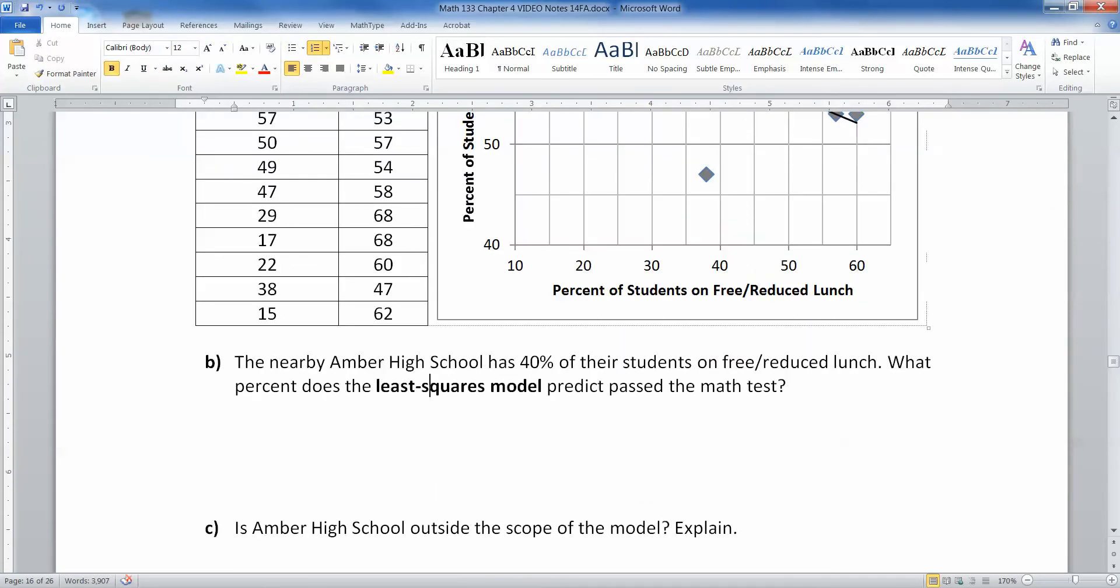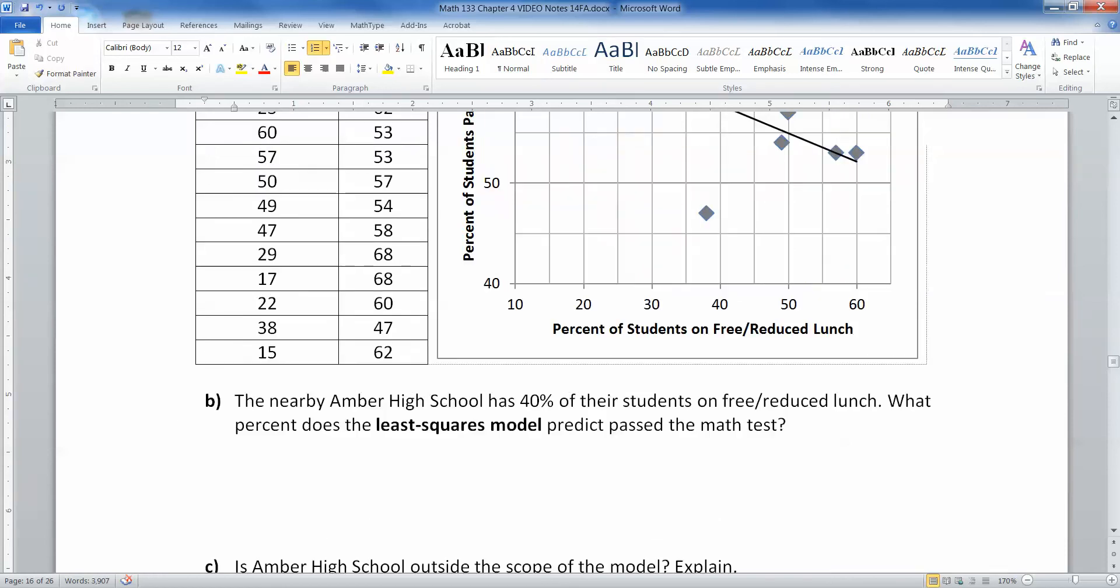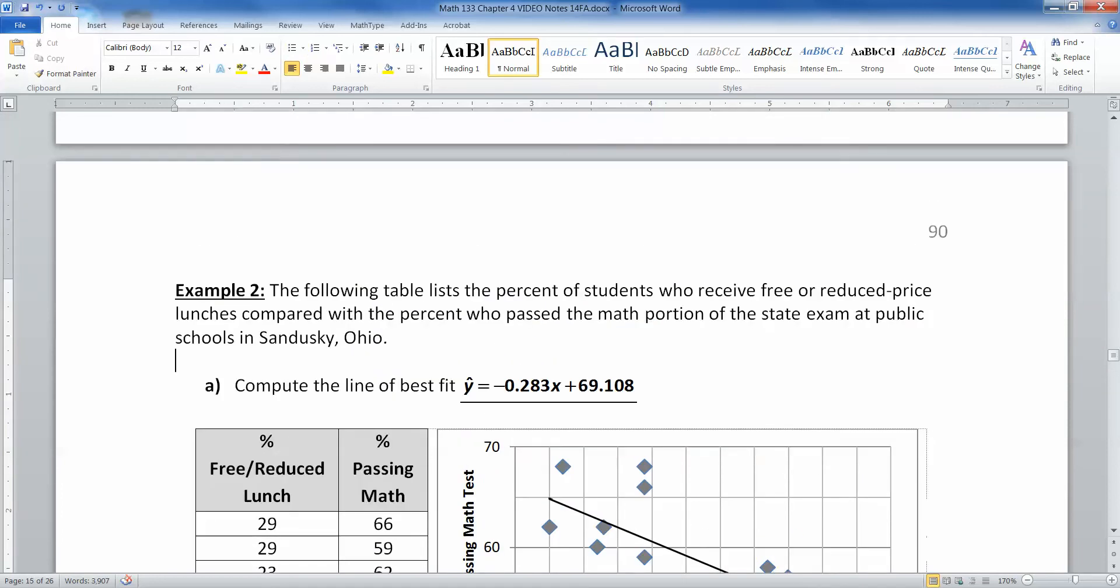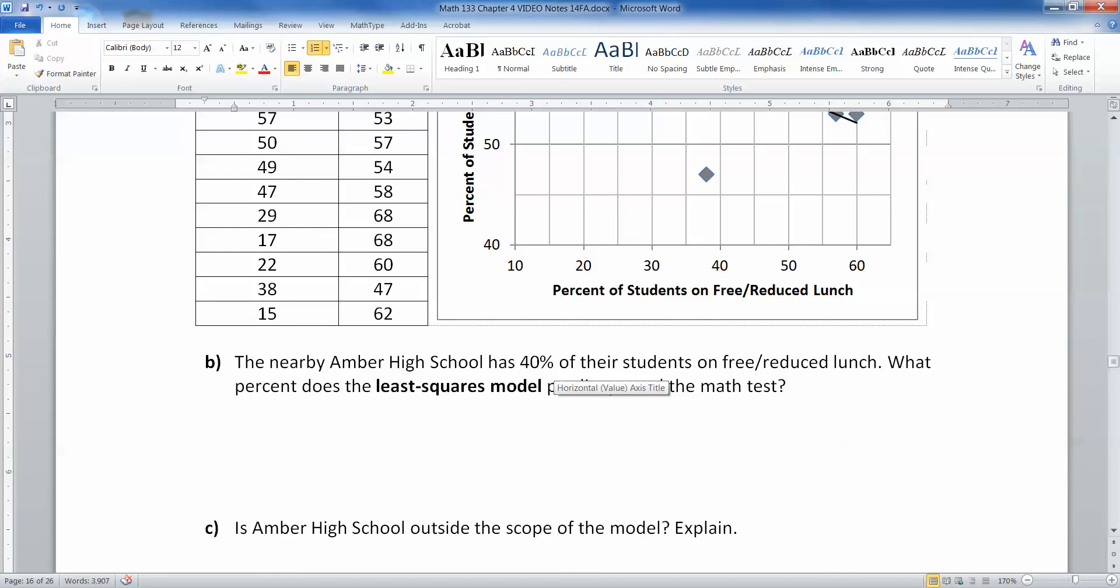So now that we've found the regression equation, let's use it to answer some questions because the equation itself is no good unless we can use it to do stuff with. So now we have the nearby Amber High School has 40% of their students on free or reduced lunch. What percentage does the least squares model, that's another word for this thing that you just found called the linear regression model, the line of best fit, all that stuff, what would that model predict is the percentage that passed the math test?